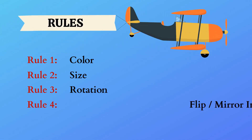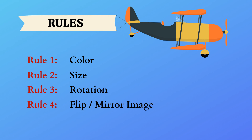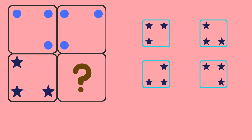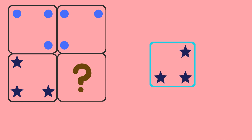Rule 4: Flip or mirror image. In the first figure, we have three dots — two of them on the top corners and one in the bottom right corner. The second figure also has three dots — two on the top corners and one in the bottom left corner. So the second figure is a mirror image of the first figure. In the bottom figure, we have three stars. Applying the same rule, it should be two stars in the bottom corners and one star in the top right corner.